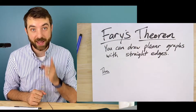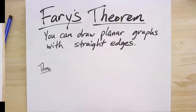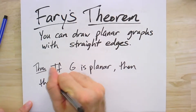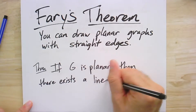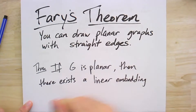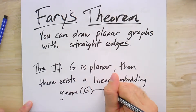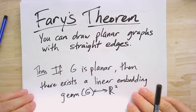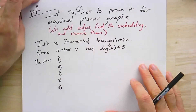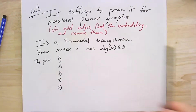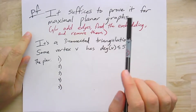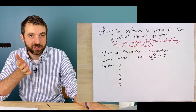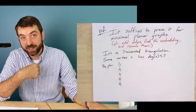You can draw a planar graph and embed it with all straight lines. In other words, if G is planar, then there exists a linear embedding. To prove this, I'm first going to claim that it suffices to prove it for maximal planar graphs. If the graph isn't maximal, you could just add more edges, do the embedding, and then remove those edges — it would still be a linear embedding.